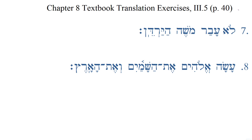We're going to look at the textbook translation exercises from Fuller and Choi, Chapter 8, on page 40, and we'll look at number 7 and number 8. Let's look at number 7 first.